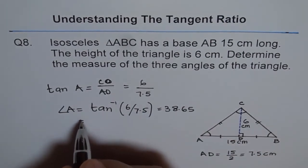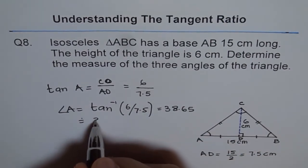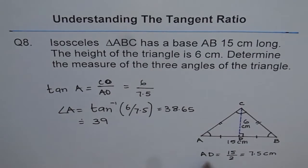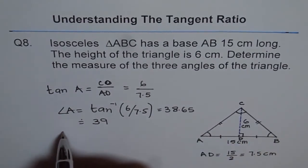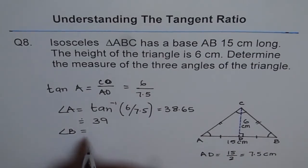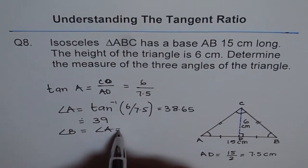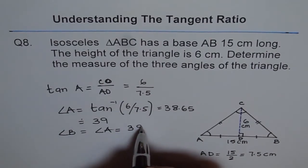We'll round this to a whole number and let's call it 39. So angle A is 39. Since the triangle is an isosceles triangle, angle B equals angle A. So angle A and B both are 39 degrees.